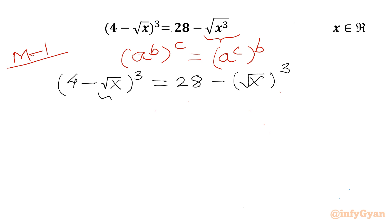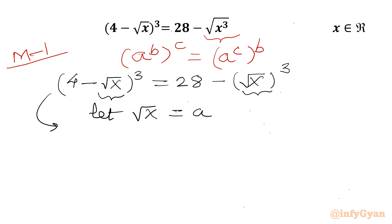Now you can see √x appears on both sides. So let us assume √x = a. We can then write our equation as (4 - a)³ = 28 - a³.